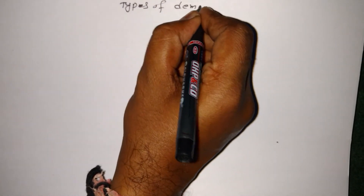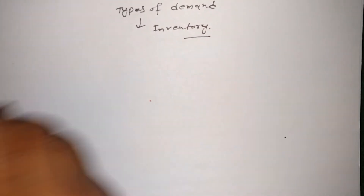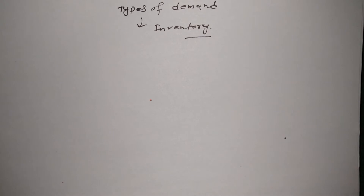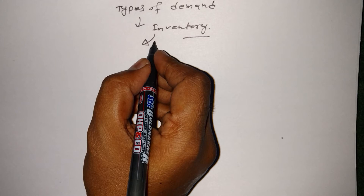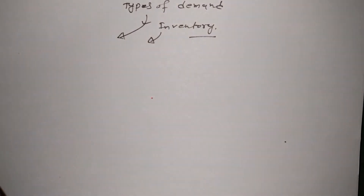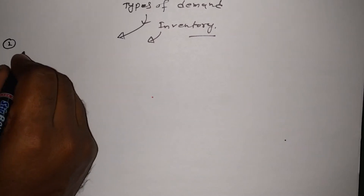Today I'm going to share one of the most important topics: types of demand in inventory. I was discussing what inventory is, types of demand, and types of cost. In this tutorial I'm going to discuss types of demand — we have a few types: uncertain demand, deterministic model, and probabilistic model.